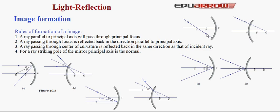Rule 4: for a ray striking the pole of a mirror, the principal axis is the normal. When it strikes the pole it is reflected back, and the angles of incidence and reflection are measured with the principal axis.